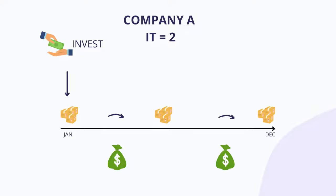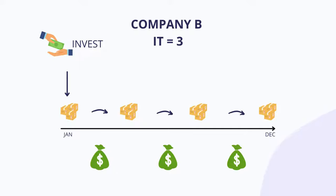Company B has a higher inventory turnover at 3, so it was able to turn this inventory one more time and profit from it again during the same year.